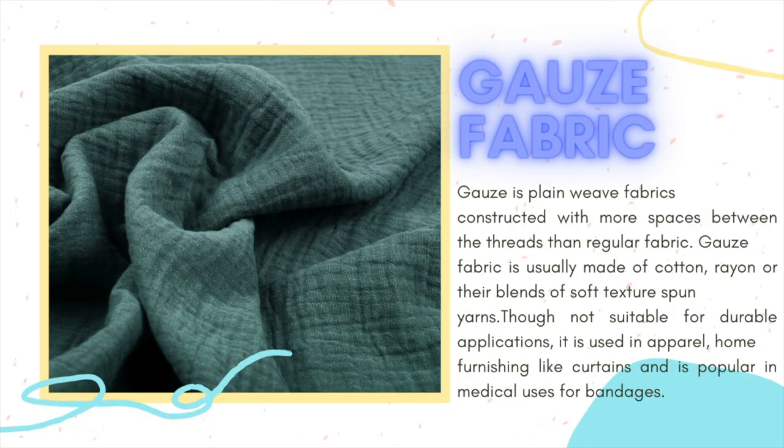Gauze fabric. Gauze is a plain-weave fabric constructed with more spaces between the threads than regular fabric. Gauze fabric is usually made out of cotton, rayon, or other blends of soft texture spun yarns. Though not suitable for durable applications, it is used in apparel, home furnishings like curtains, and is popular in medical use for bandages.